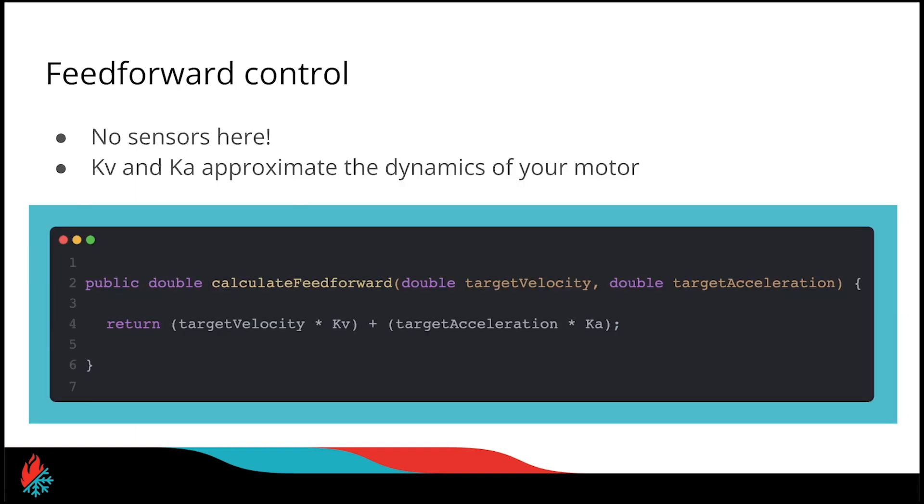Let's talk about feedforward control. Feedforward control is really powerful because it allows us to control a motor without having any idea of its current state. Feedforward works by approximating the dynamics of our motor. We have two constants here, KV, which stands for proportional to velocity, and KA, which stands for proportional to acceleration. Just by having our current target velocity and our target acceleration, without any measurements, we are able to move our system to this target position. The reason for that is because this is velocity, it is a first order system, and motors happen to be stable.